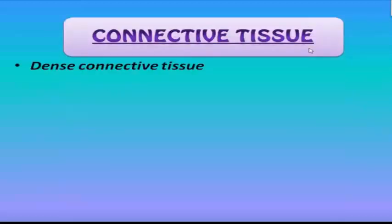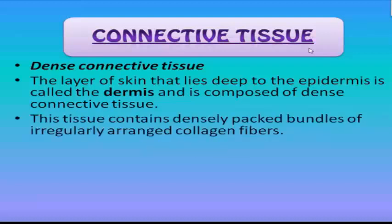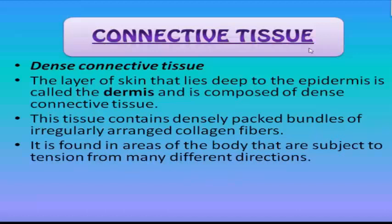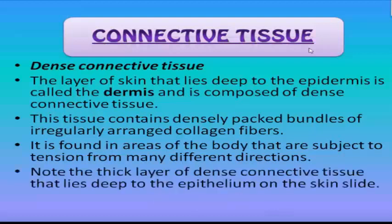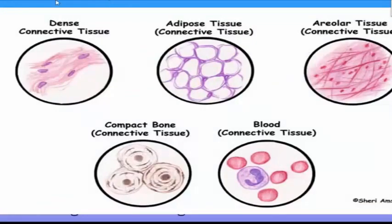Connective tissues include dense connective tissue — the layer of skin that lies deep to the epidermis, called the dermis, is composed of dense connective tissue. This tissue contains densely packed bundles of irregularly arranged collagen fibers, found in areas subject to tension from many directions. The nuclei of connective tissue cells are scattered throughout the collagen fibers. Other kinds of connective tissue include adipose, areolar, compact, and blood.